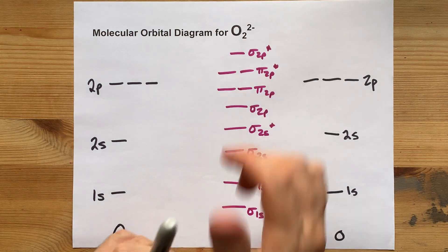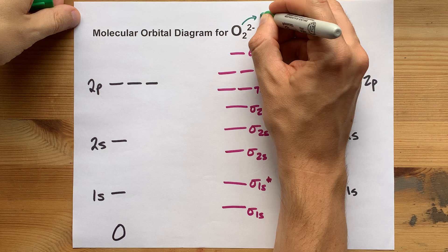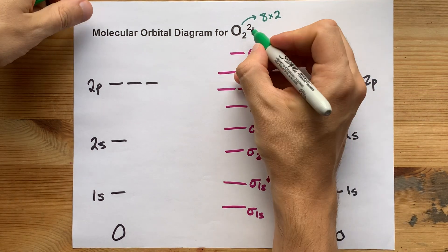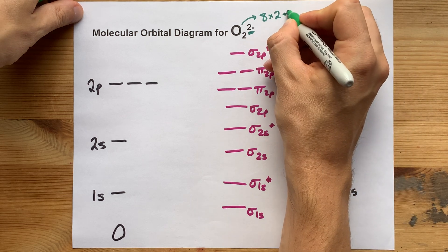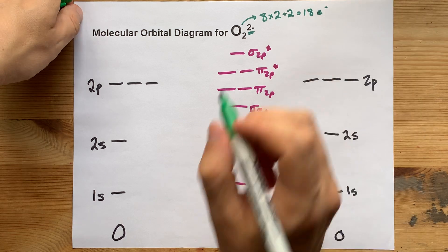Let's fill this with electrons. Because I included the first shell, oxygen's bringing eight electrons total, and there are two of them. The extra minus two charge means that there's two extra on top of that, which gives me 18 electrons total.